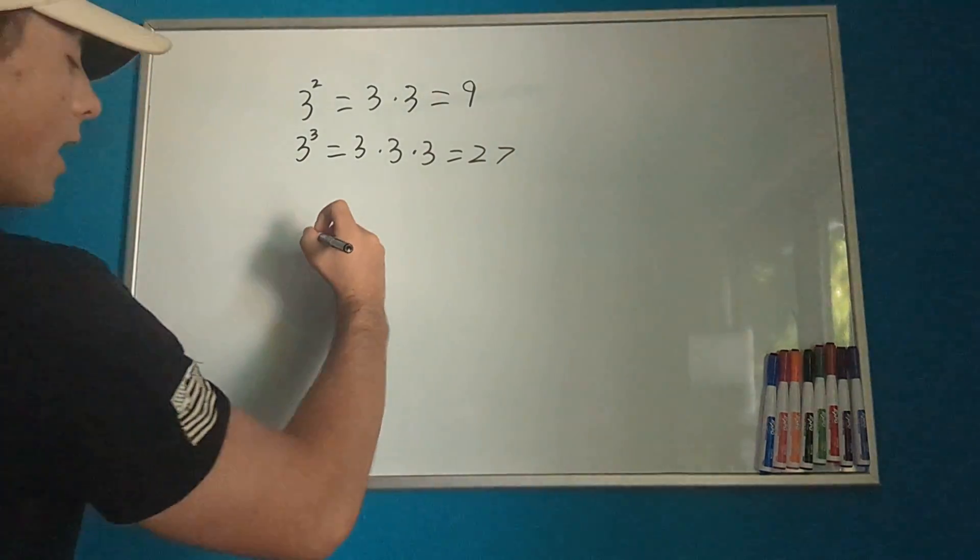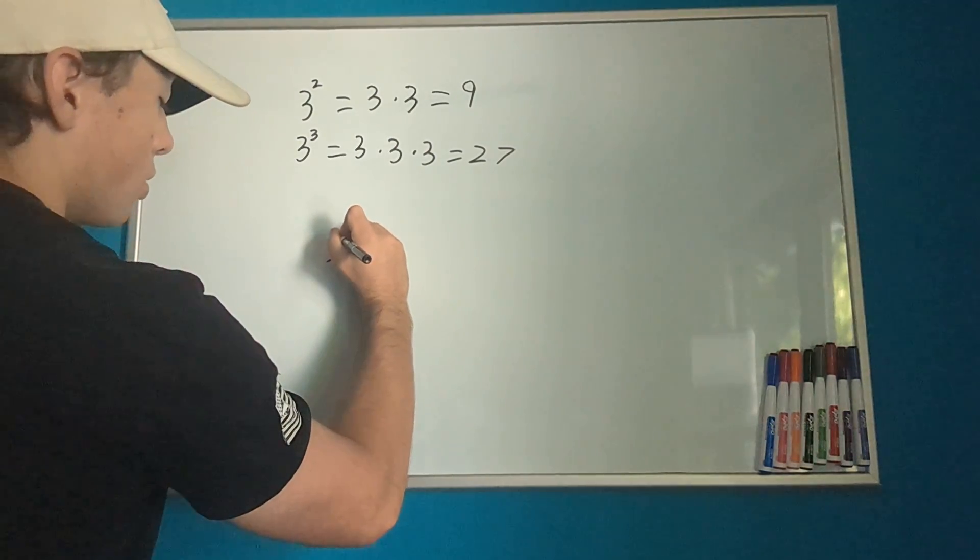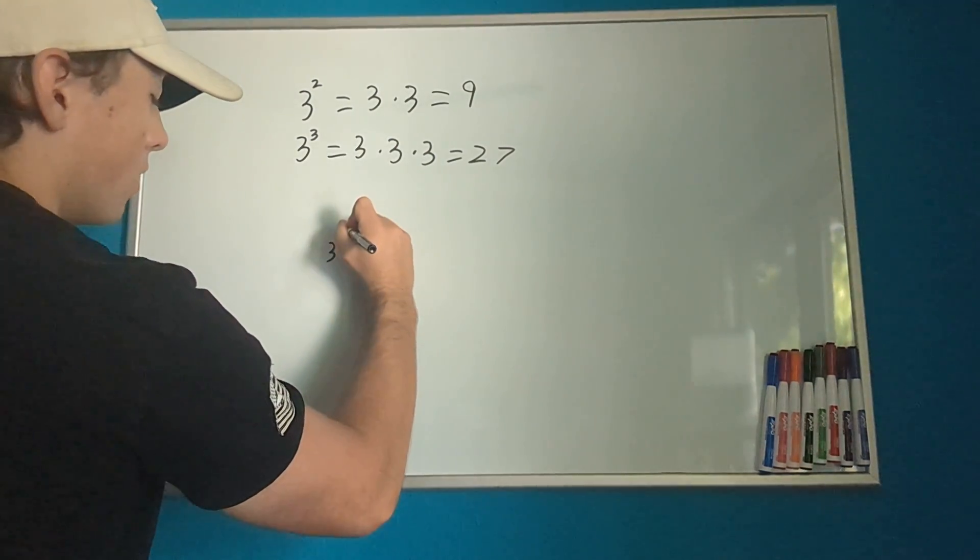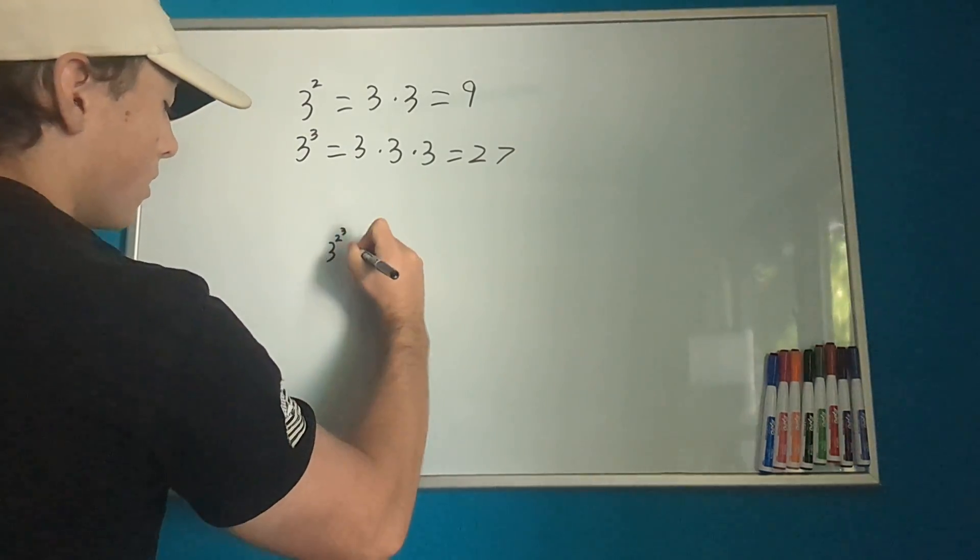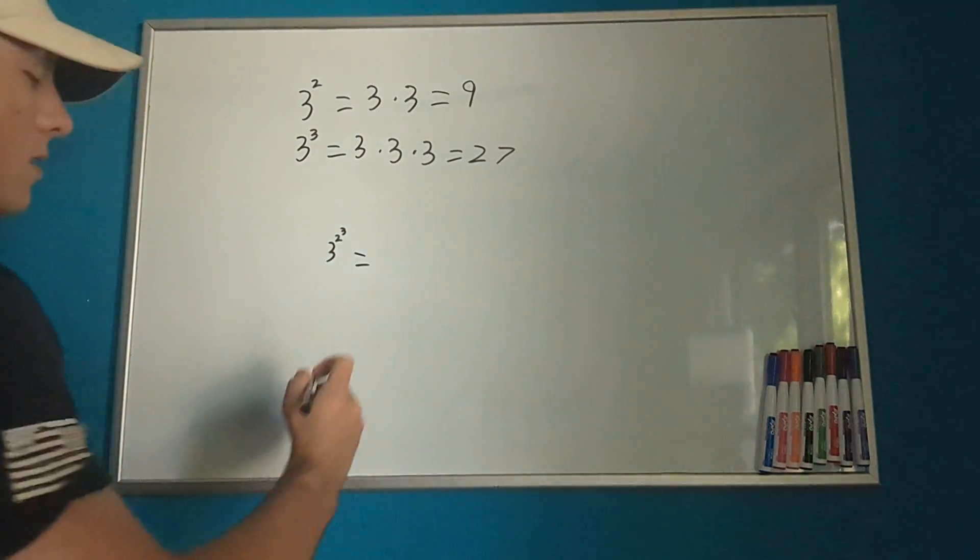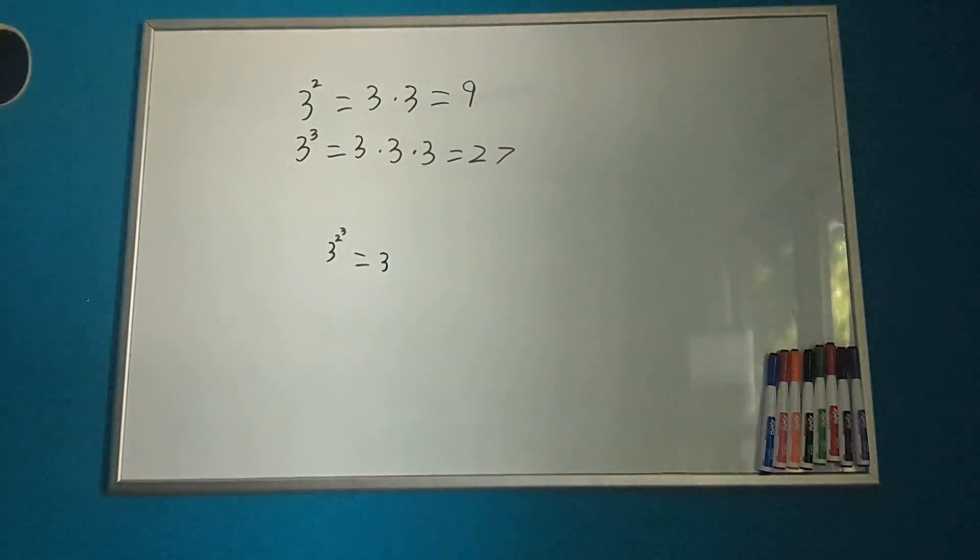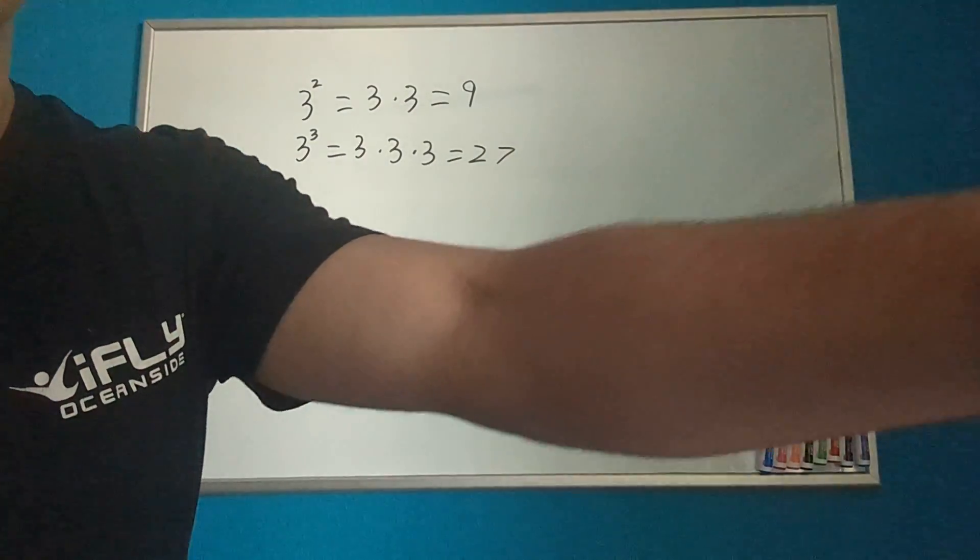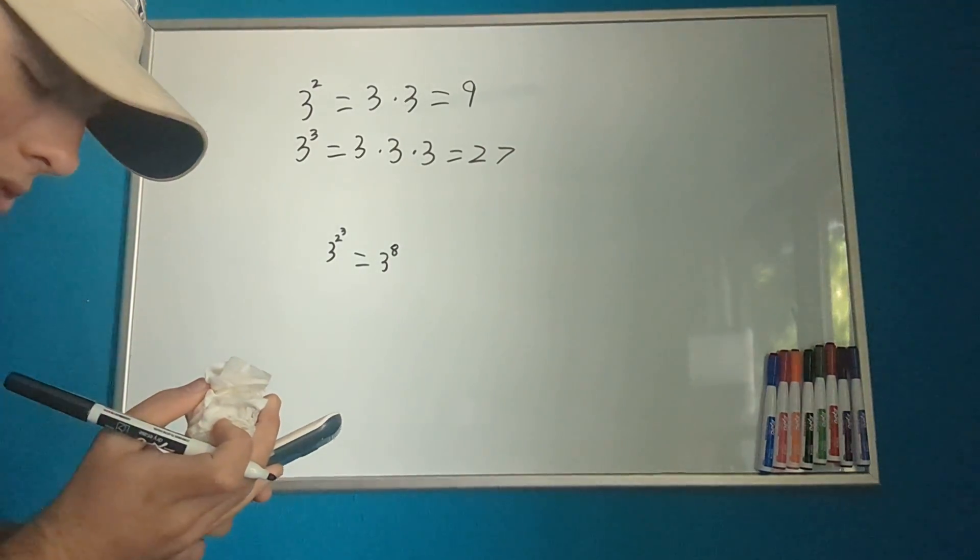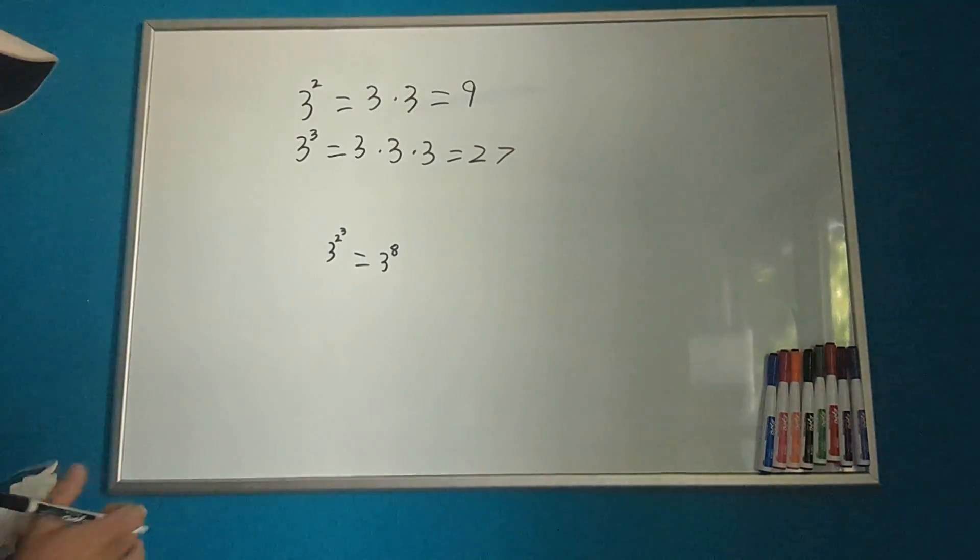Let's look at one more example. If we have 3 to the 3, we can rewrite that as 3 to the 2 times 2 is 4 times 2 is 8 to the 8. And let's grab out a calculator. 3 to the power of 8 equals 6,561.